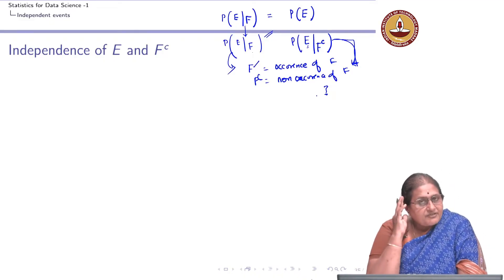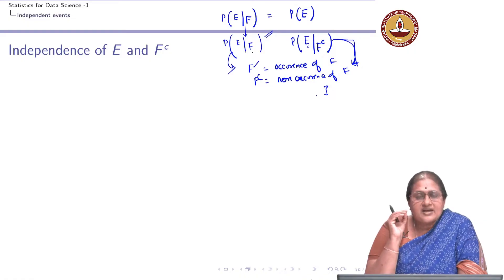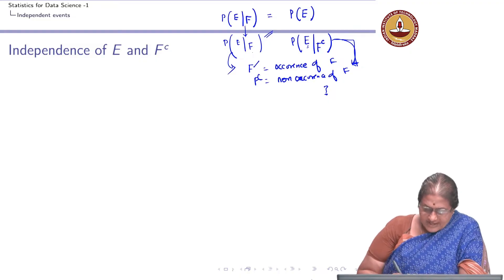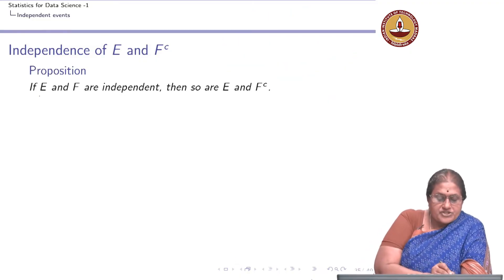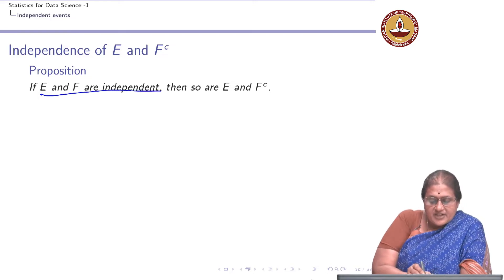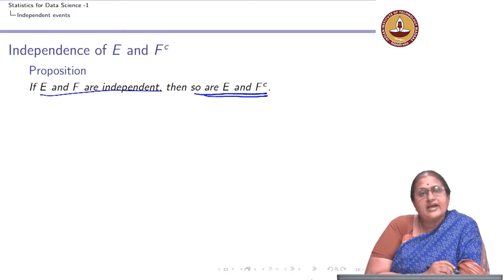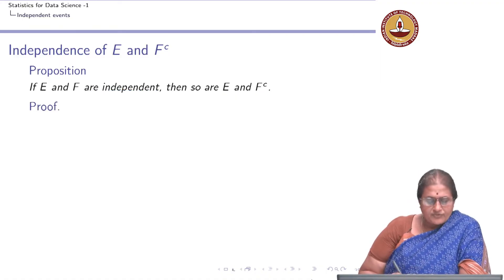In other words, if the occurrence of E is independent of the occurrence of F, can I say that the occurrence of E is also independent of the non-occurrence of F? The proposition is: if E and F are independent, then so are E and F complement. This requires a very simple proof.